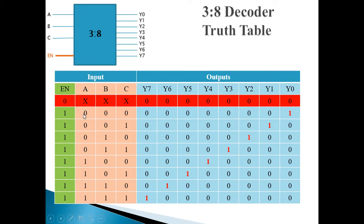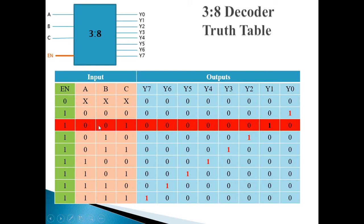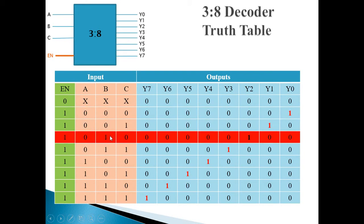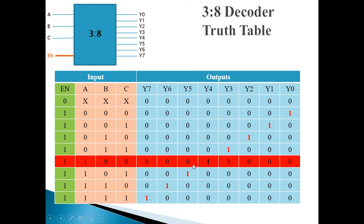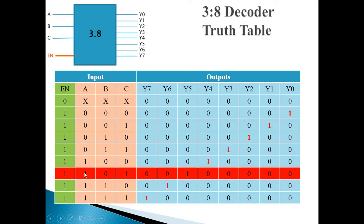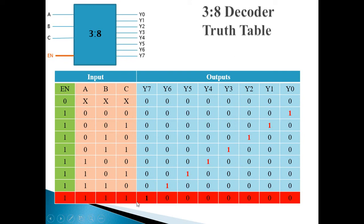When A, B, C are 0, 0, 0, only Y0 will be 1 and rest all are 0. If A, B, C are 0, 0, 1, only Y1 will be 1. If A, B, C are 0, 1, 0 — that is 2 — only Y2 will be 1. For 3, Y3 will be 1. For A, B, C equal to 1, 0, 0 — that is 4 — Y4 will be 1. For 1, 0, 1 — that is 5 — Y5 will be 1. For 1, 1, 0, Y6 is 1. And for A, B, C input 1, 1, 1, Y7 is 1.